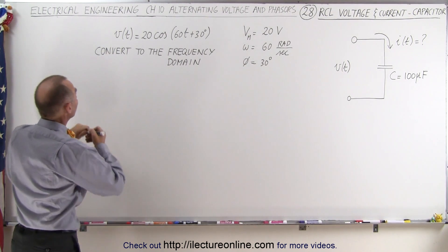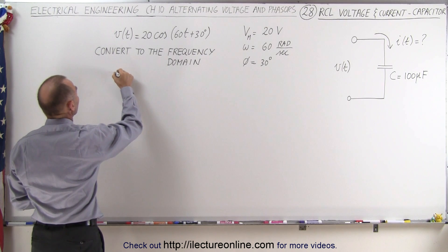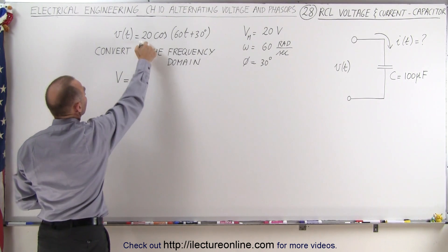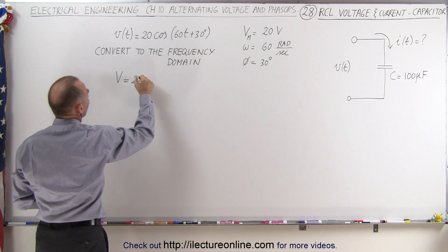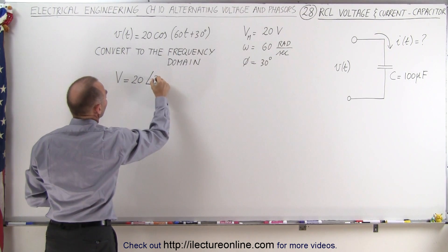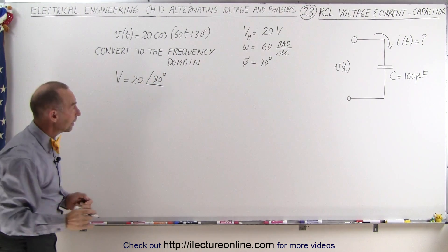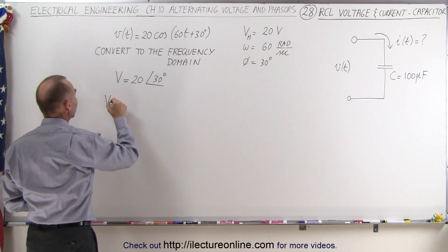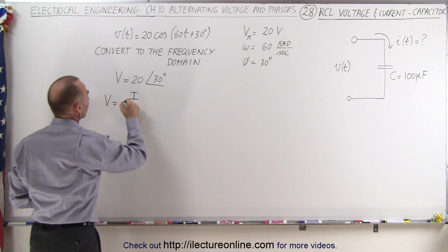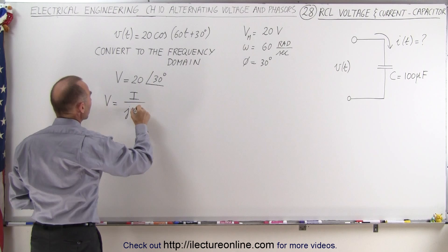We first are going to convert that to the frequency domain, which is rather easy. So the voltage in the frequency domain is equal to the maximum voltage and the phase angle of 30 degrees. And then we realize that the voltage in the frequency domain is equal to the current divided by jωc.